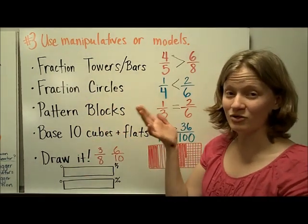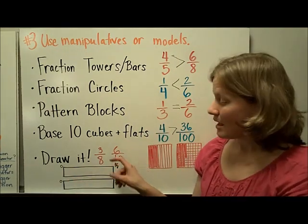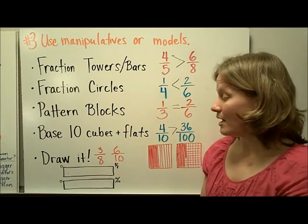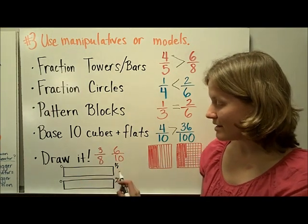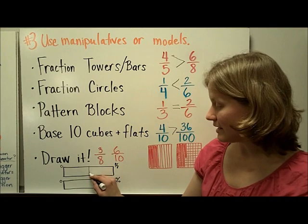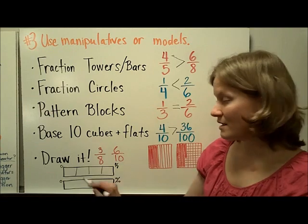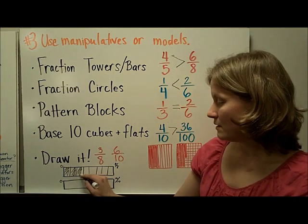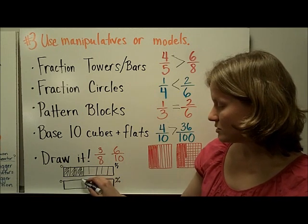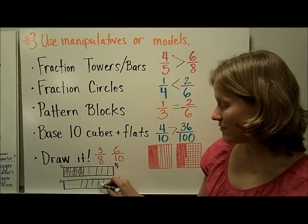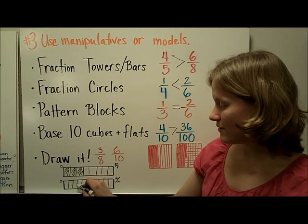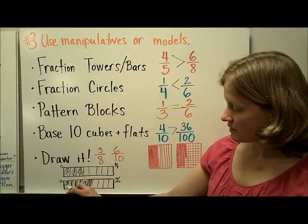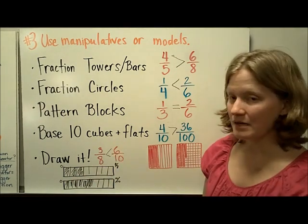Finally, if you don't have manipulatives, you can always try drawing it. I would highly suggest drawing the fraction tower model, one on top of each other so you can easily compare — this is a much more accurate model than a circle model. For three-eighths, divide the bar into eighths by halving, then halving into fourths, then into eighths, and color in three-eighths. For six-tenths, start by halving, make two small pieces on either side, divide the remaining piece in half and half again, and color in six of those tenths. We can see from this picture that the six-tenths extends beyond the three-eighths, so three-eighths is less than six-tenths.